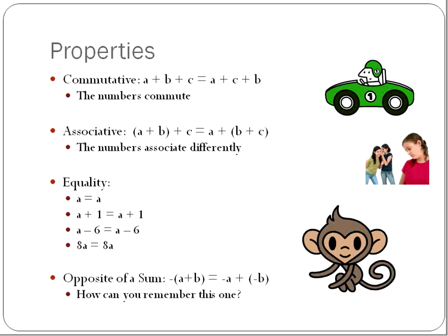There's one other property that we use very rarely, and it is the opposite of a sum. If you remember opposite numbers, the opposite number is a negative — the opposite of A is negative A, the opposite of B is negative B, the opposite of 3 is negative 3. The opposite of a sum is the opposite of two numbers being added together. The words basically tell you exactly what it is, so it's not that hard to identify and remember. The opposite of the sum is the same as adding the two negatives together.